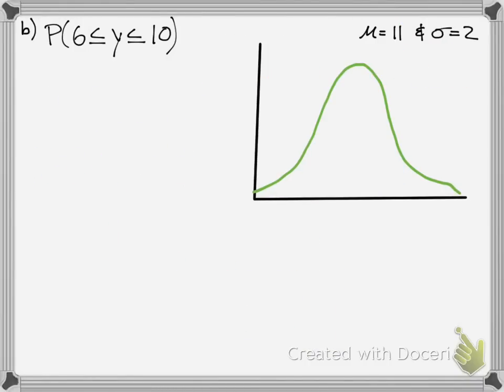We're going to have the same conditions. Mu is 11, and standard deviation, or sigma, is 2. And now we're just going to find it between 6 and 10. So, we start with the conversion.